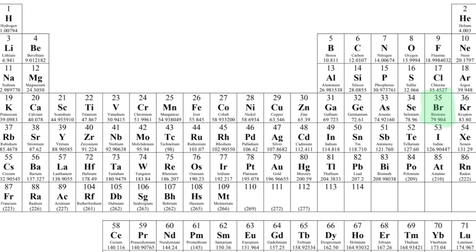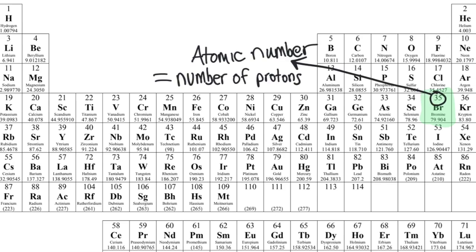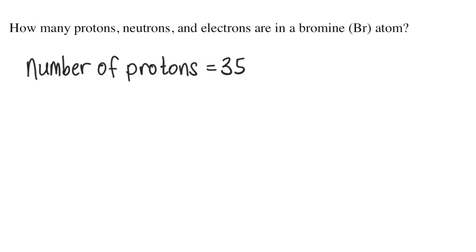There are two important numbers. The top number on the square is the atomic number. This is the number of protons in the nucleus of that element. So the number of protons in bromine is 35.